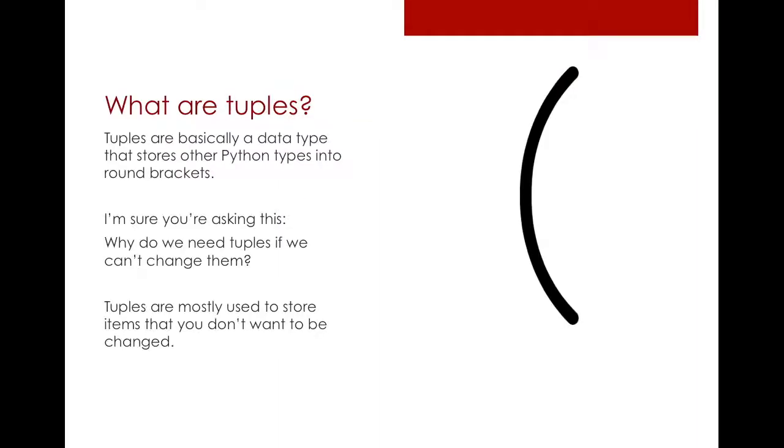So first of all, what are tuples? A tuple is a different data type in Python, and you can automatically identify it through round brackets. That's maybe the only thing you need to know about tuples, is that you can notice a tuple from its round brackets.